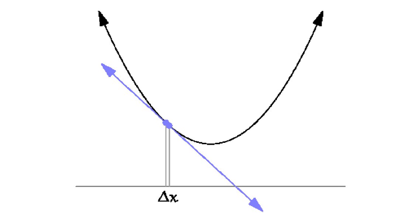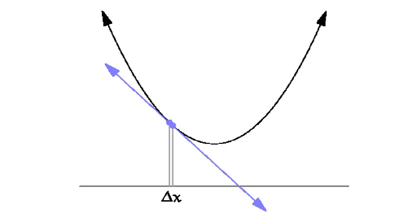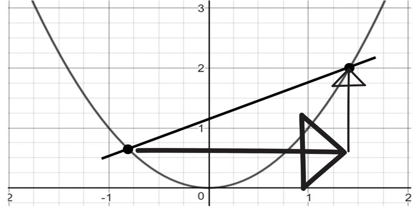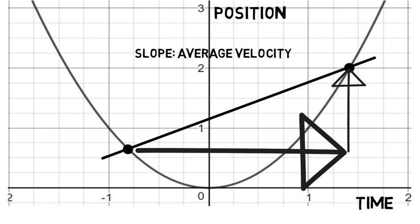So why is this important? Well in terms of basic physics, if we go back to this curve and assume it represented position as y over time as x, then the slope of this line would be your average velocity between those two points.